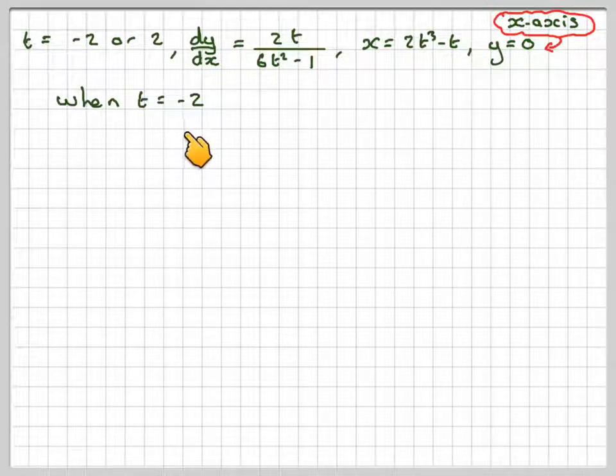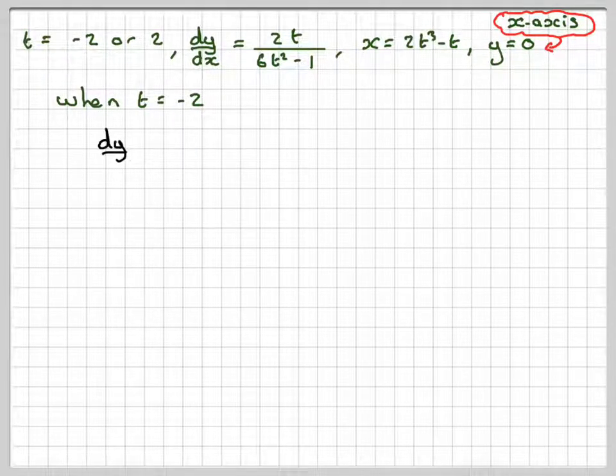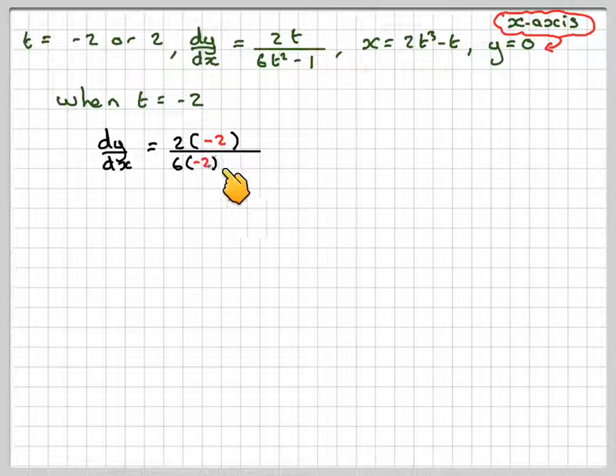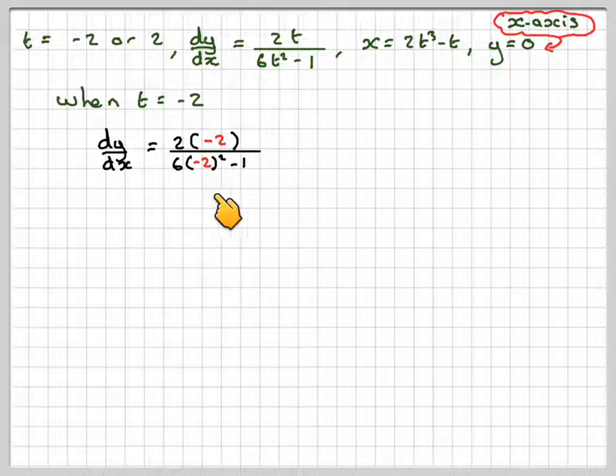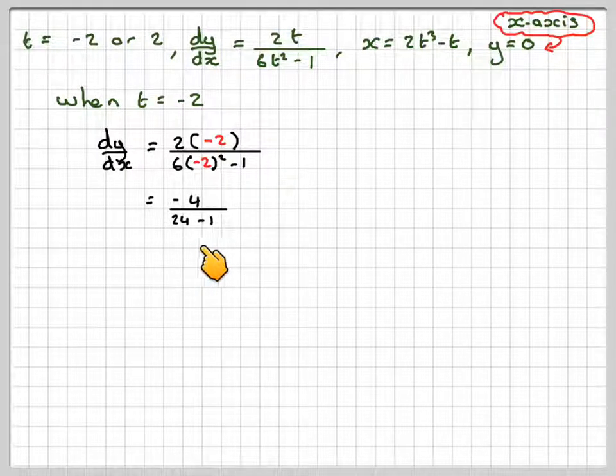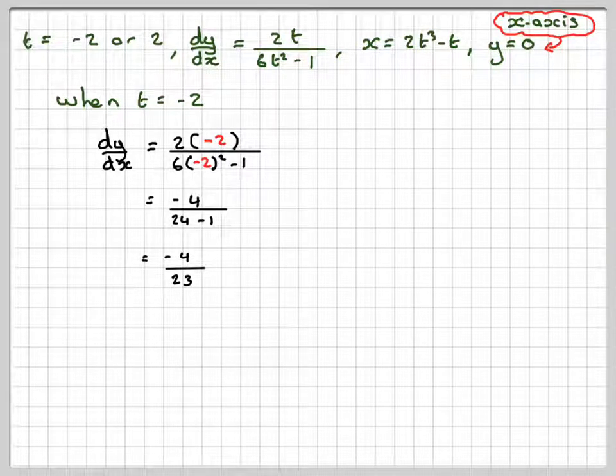When t equals minus 2, dy by dx is going to be 2 times minus 2 over 6 times (minus 2) squared minus 1. That gives me minus 4 divided by 24 minus 1, which is minus 4 over 23.